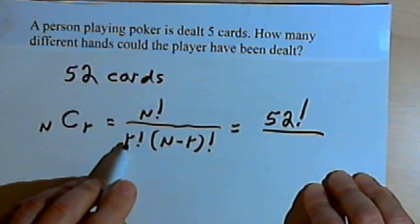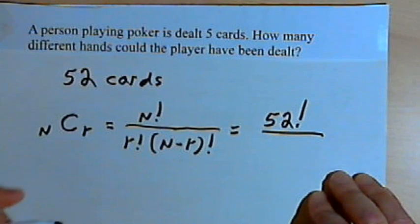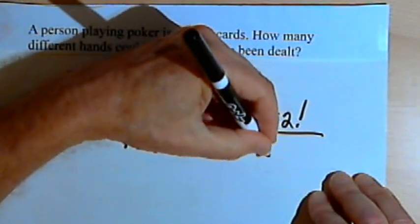And then we've got r. That's how many objects we're taking for each combination. And that's going to be 5, the 5 cards. So that's going to be 5 factorial.